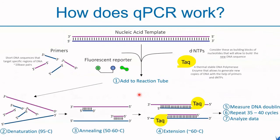This is a simplified diagram showing the QPCR thermal cycles. QPCR consists of a series of thermal cycles, with each cycle consisting of denaturation, annealing, and extension steps, plus a DNA doubling measurement by detecting fluorescence signals. These cycles will be repeated for 35 to 40 cycles, and then we can analyze the QPCR data.